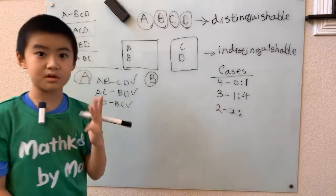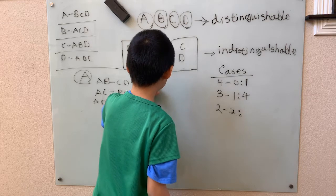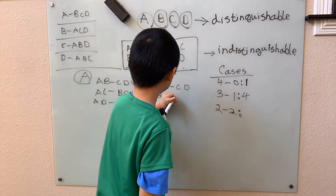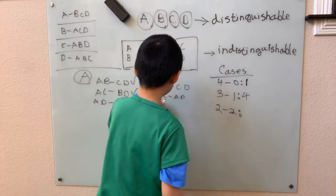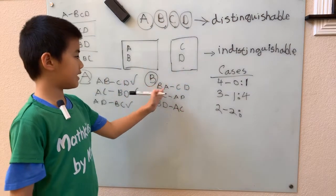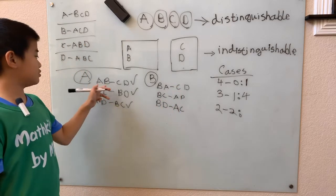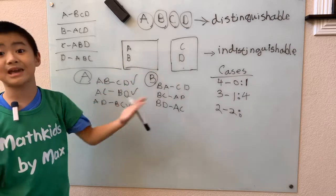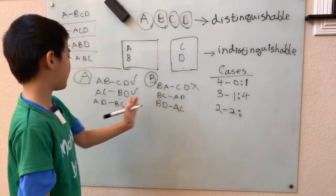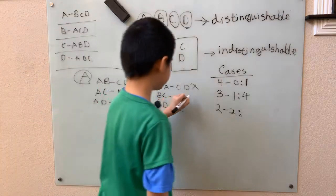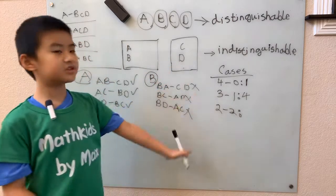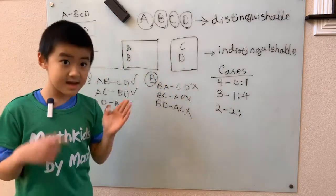Now let's look at what happens when B stays in the box. There are again three possibilities: B,A vs C,D; B,C vs A,D; and B,D vs A,C. But A,B vs C,D — we already counted that. It doesn't matter that we swapped the order; they're still in the same box. So we can't count that possibility. Similarly B,C vs A,D and B,D vs A,C are already counted. So none of the possibilities when B stays in this box give us new combinations.